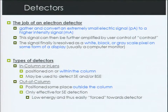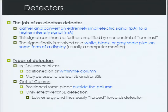Now let's talk about the importance of the detector, its role, and how it actually operates. We've already discussed the different types of beam-sample interaction and different types of electrons we will detect, specifically secondary and backscattered. The job of an electron detector is to gather the electrons, but also it must convert that signal, which is extremely small — typically around picoamps — and generate a higher intensity signal around milliamps. This signal can then be further amplified by user control of our contrast knob, and finally the signal will be resolved as a white, black, or grayscale pixel on a computer monitor display.